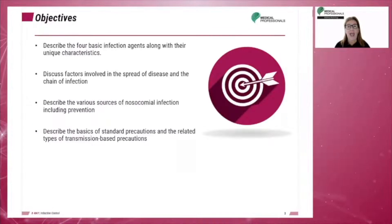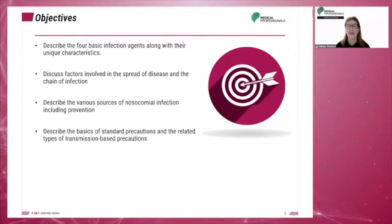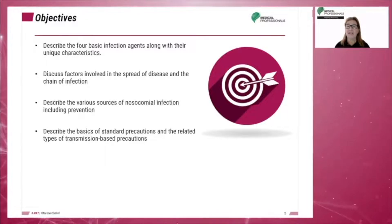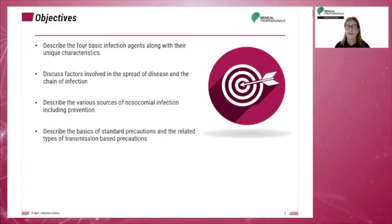After completing this module, you should be able to describe the four basic infection agents along with their unique characteristics, discuss factors involved in the spread of disease and the chain of infection, describe the various sources of nosocomial infection, including prevention.